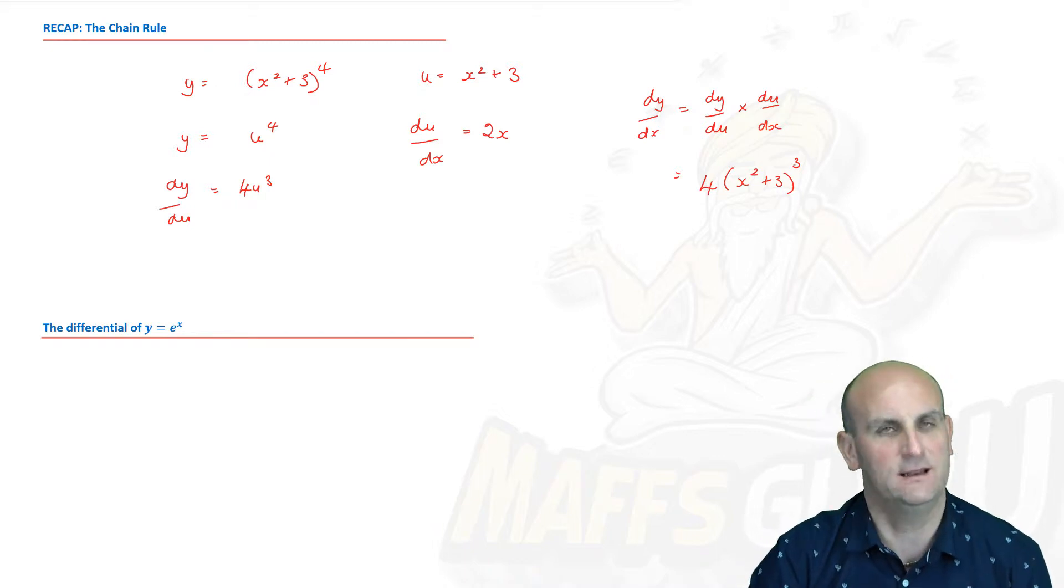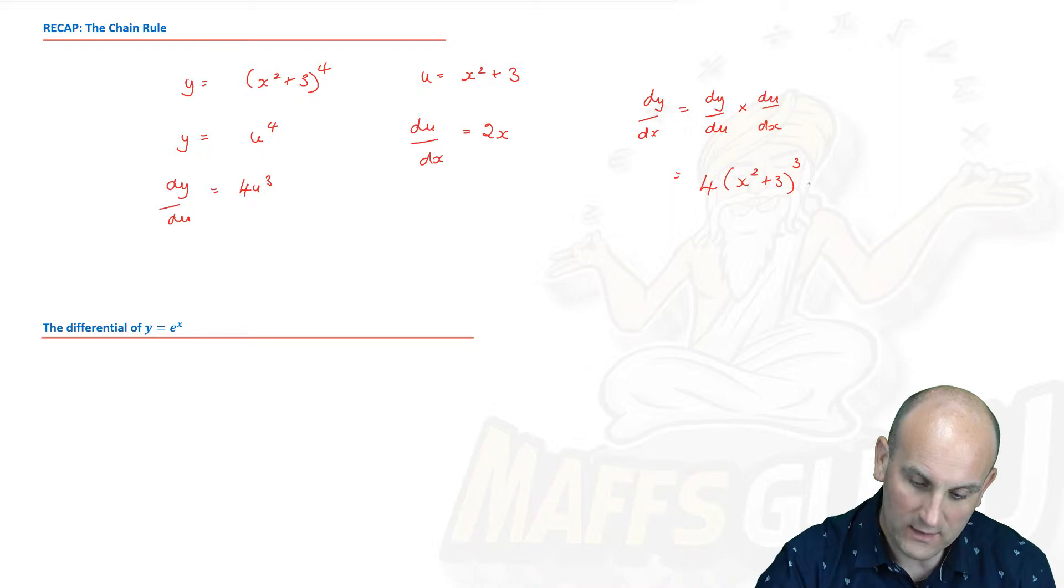So dy/du we knew was 4. Now u³. We cannot put the u in here. We have to take it back and say, well that was actually (x² + 3)³. If you put a u in, sadly the examiners get a little upset and go, no no no no no, you haven't understood and you have got this wrong. And then we're going to multiply that by du/dx which is just 2x. So multiplying that together we have 8x(x² + 3)³.